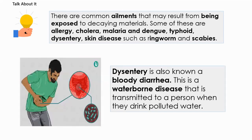Dysentery is also known as bloody diarrhea. It is a waterborne disease that is transmitted to a person when they drink polluted water.